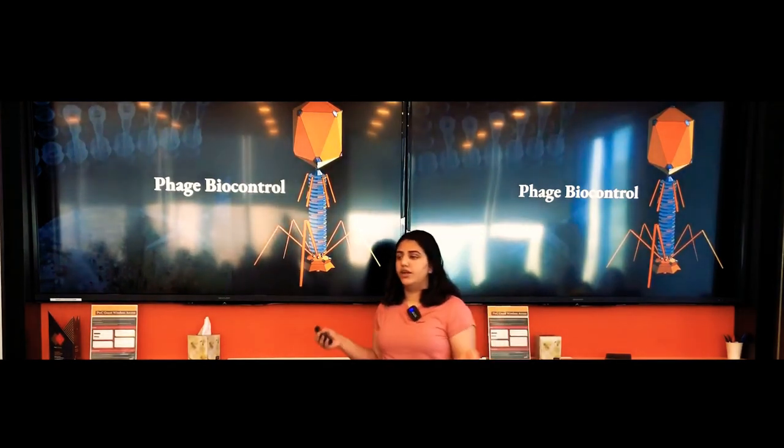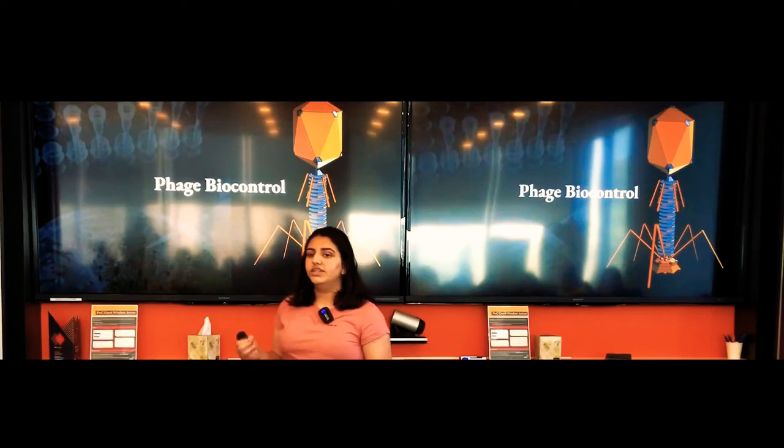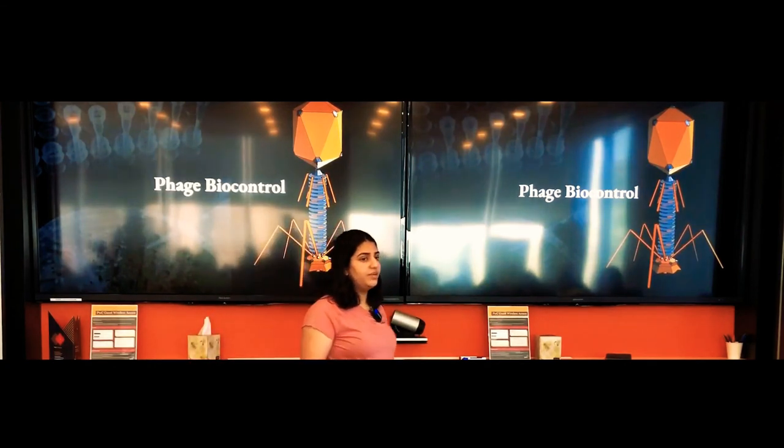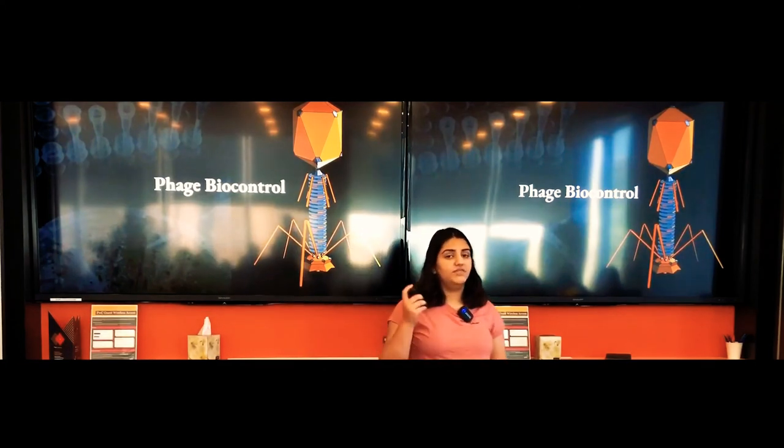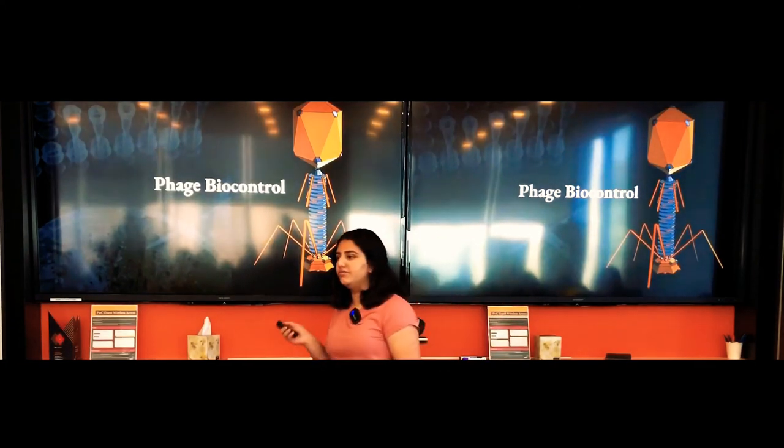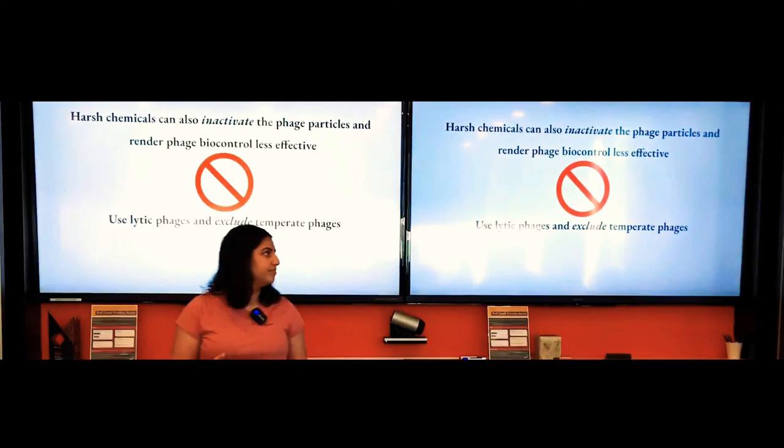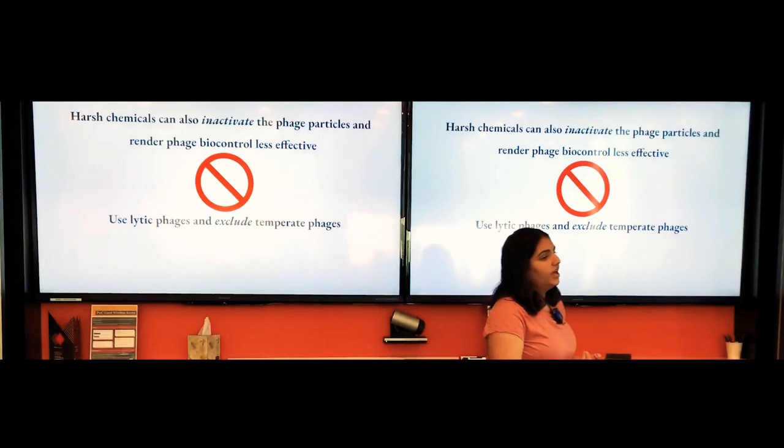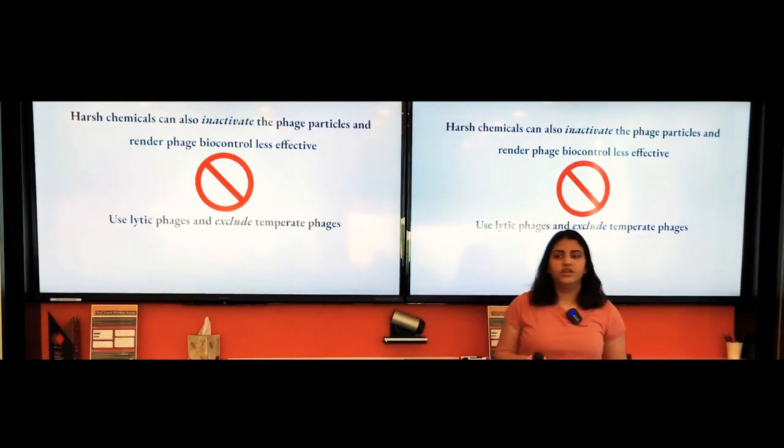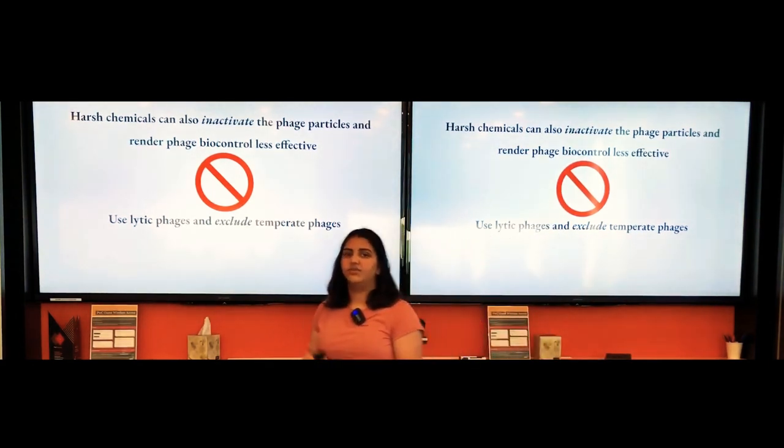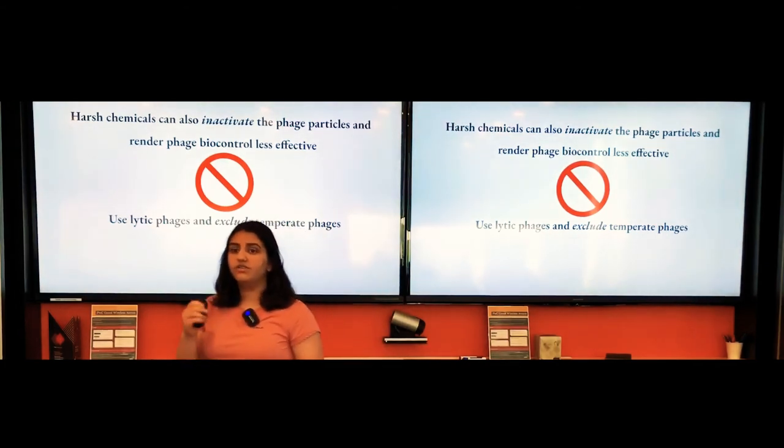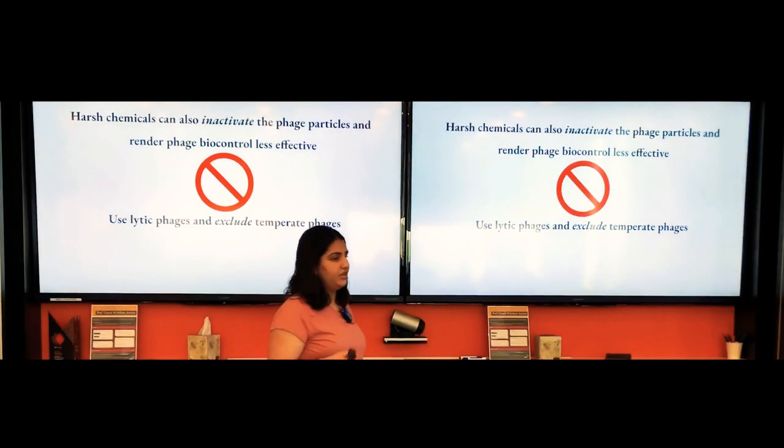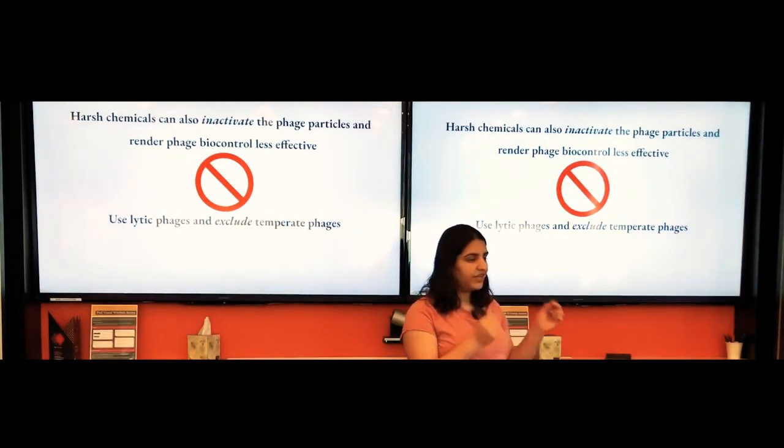This can be mitigated by using phage cocktails, which are a mix of different phage species. Phage biocontrol does have quite a few drawbacks. Firstly, it's difficult to identify which phages are lytic and which are temperate, and this is really important because we need lytic phages. Temperate phages, because their DNA is included in the bacterium's chromosome, can actually promote the transfer of undesirable genes.